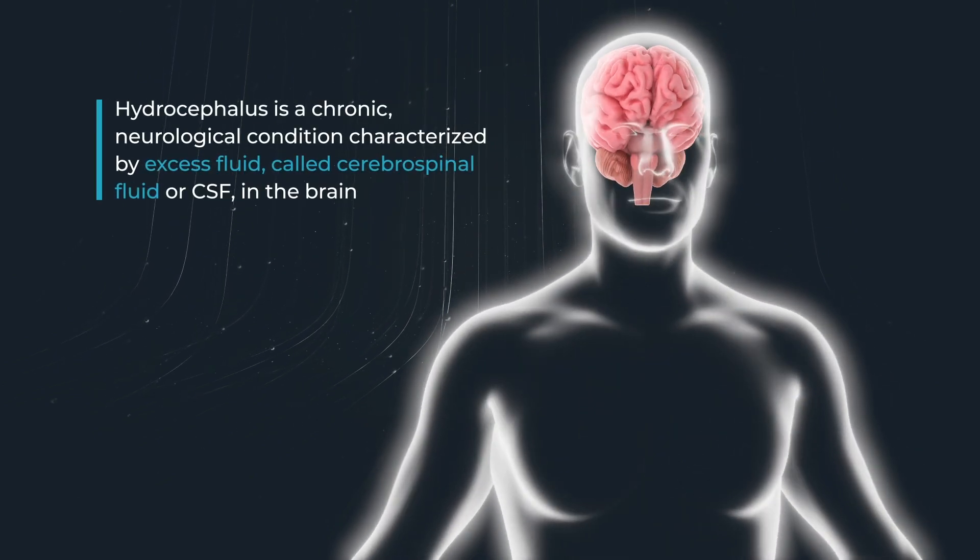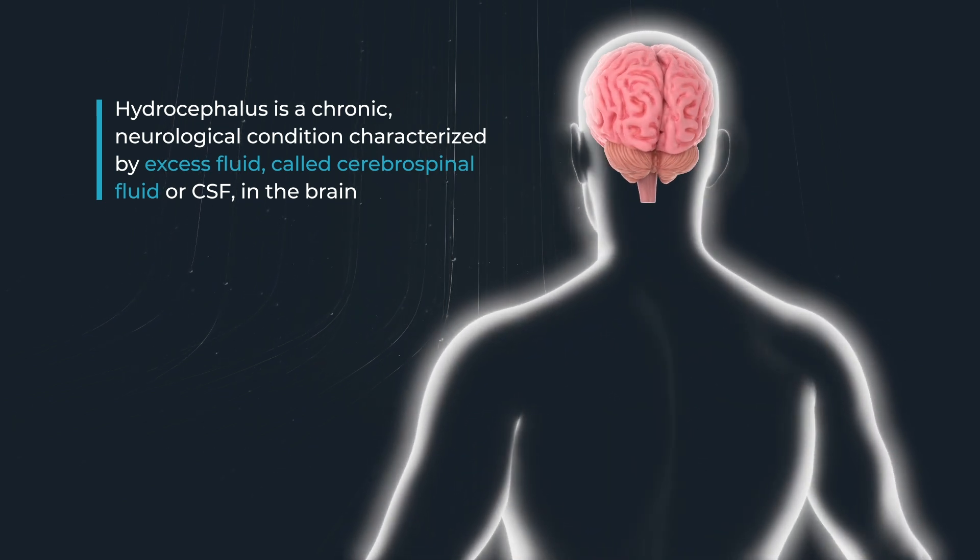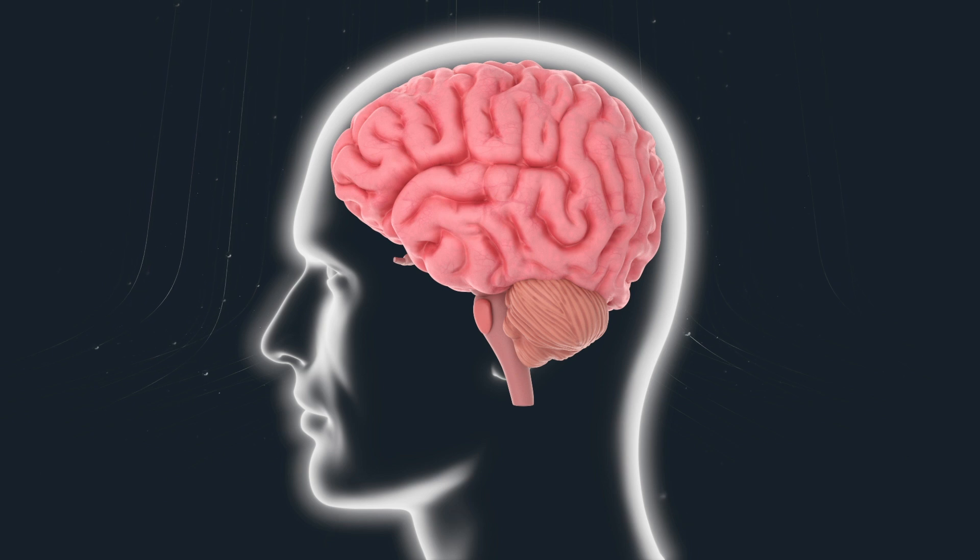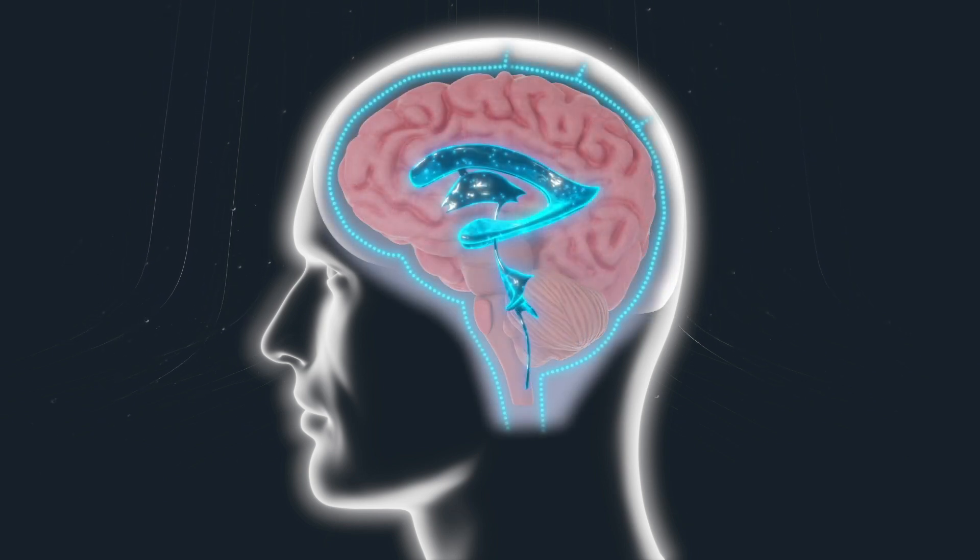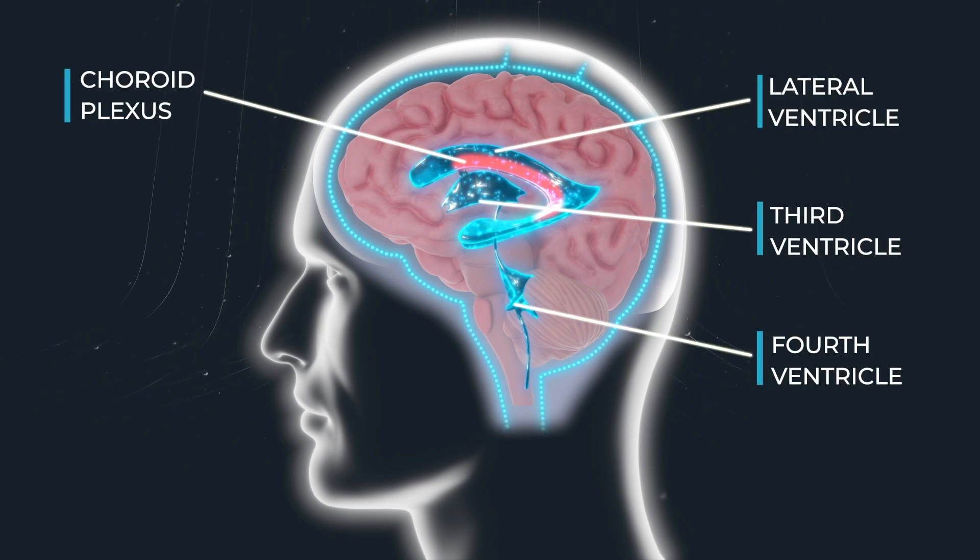Hydrocephalus is a chronic neurological condition characterized by excess cerebrospinal fluid, or CSF, in the brain. Our brain and spinal cord are surrounded by fluid that acts as a cushion, protecting our brain against injury. This fluid is produced mostly in the choroid plexus in the ventricles and is in constant circulation, being absorbed into the bloodstream.